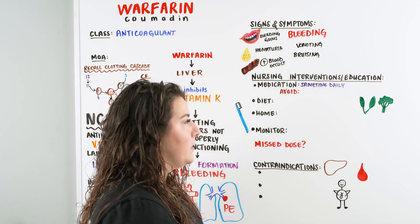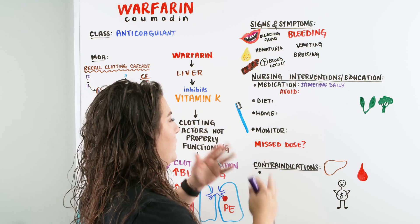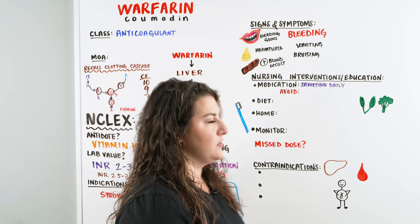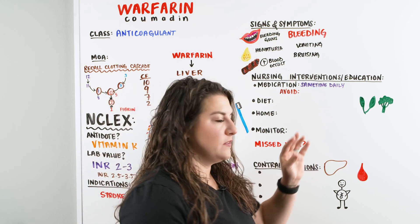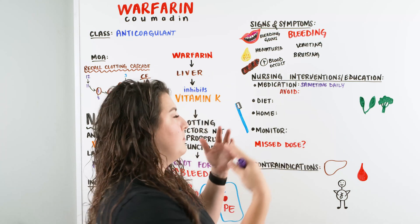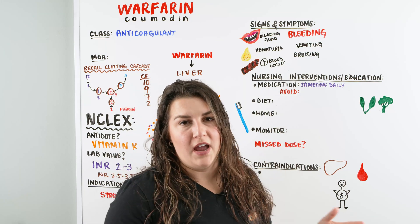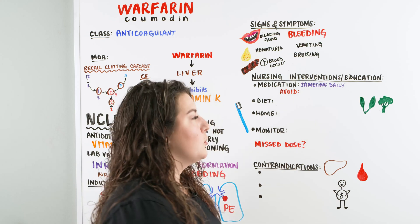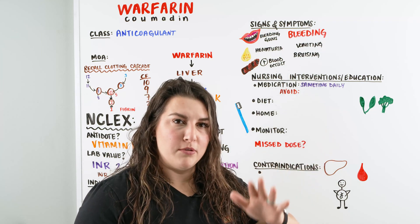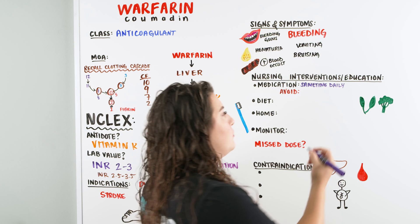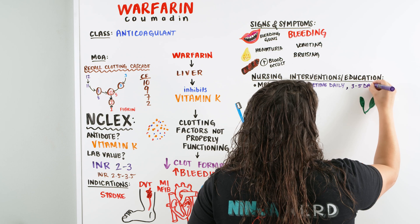Warfarin actually takes a couple of days to take effect. When we take it, it inhibits the clotting factors, but the body already has developed fibrin and other clotting materials. Warfarin does not break down current clots — it prevents the body from making more. So things with lifespans of several days take time to come down, meaning we don't usually see the full effects until three to five days later.